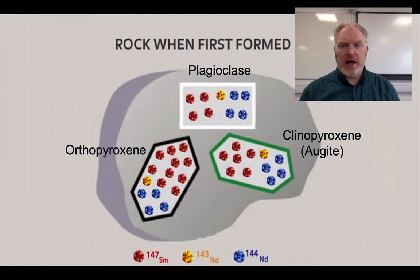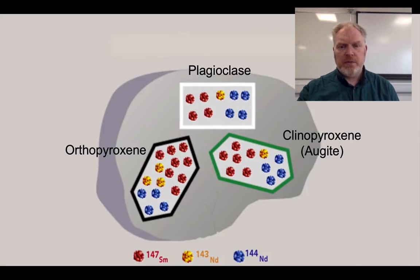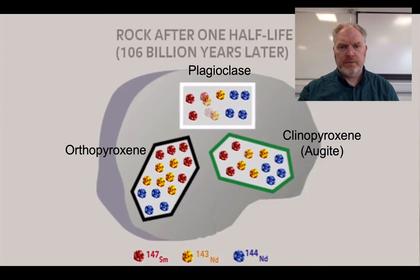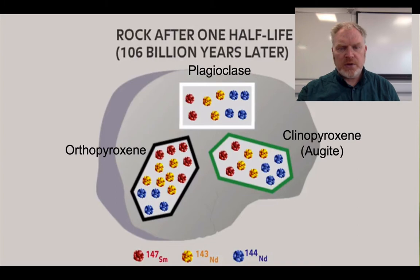When the rocks first formed, we've got a ratio of these elements to each other. Over time, what we see is the Samarium decaying to form Neodymium, so the ratios of these elements change over time. This ratio is slightly different from what we've seen with potassium-argon, because we're not just talking about two elements — a parent and daughter — we're talking about three elements and the ratio of those.